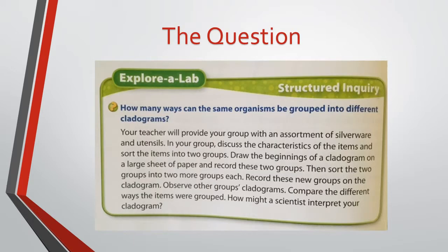The Explorer Lab asks the question: how many ways can the same organisms be grouped into different cladograms? Students will discover that items can be grouped in many different ways, depending on which characteristics they select, which has important implications as students learn about the theory of evolution. The point of this Explorer Lab is to compare the results of several different sorting activities. If your class is too small to have several groups, each group could sort the same utensils multiple times, using different characteristics to generate several different sets of results.